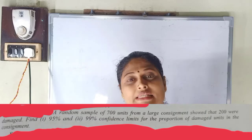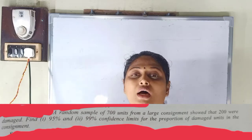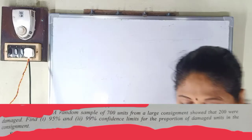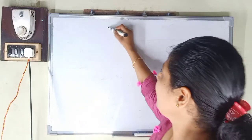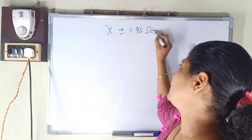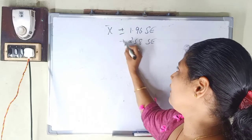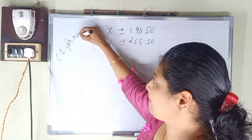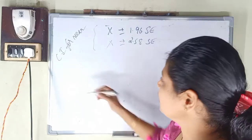The formula is: P plus or minus z times the standard error. For 95% confidence, the z-value is 1.96. For 99% confidence, the z-value is 2.58. We compute the root of PQ by N.